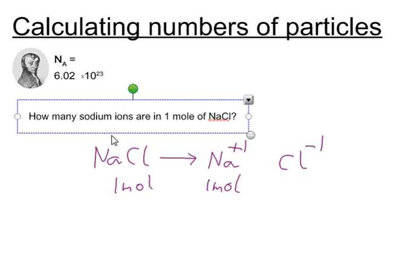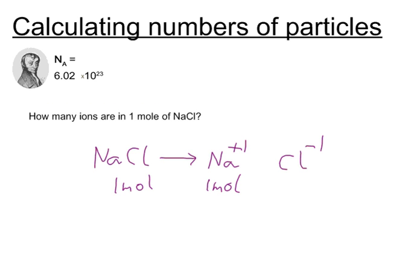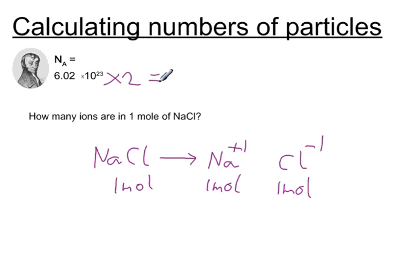Now let's change this question. How many ions are in one mole of sodium chloride? If we start off with one mole of sodium chloride, that contains one mole of sodium ions and also one mole of chloride ions. So the total number of ions in sodium chloride is equal to one mole multiplied by two, which is equal to 1.2 times 10 to the 23. The reason why it's multiplied by two is because each sodium chloride splits up into two ions.